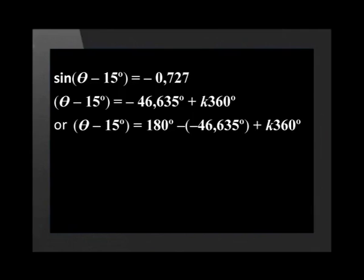Now we need to solve for theta in both equations. Let's start with the first equation. We add 15 to both sides and get theta equals negative 31.6 degrees plus k times 360 degrees, rounded to one decimal place. We can't simplify this equation any further, so let's work with the second equation.